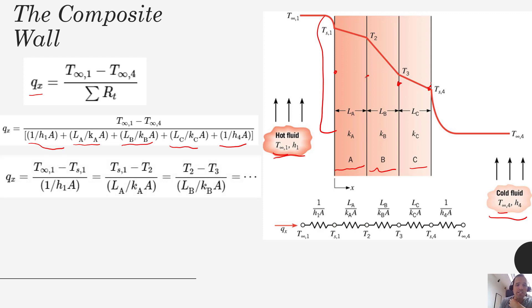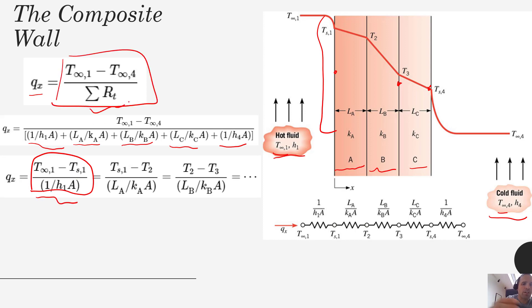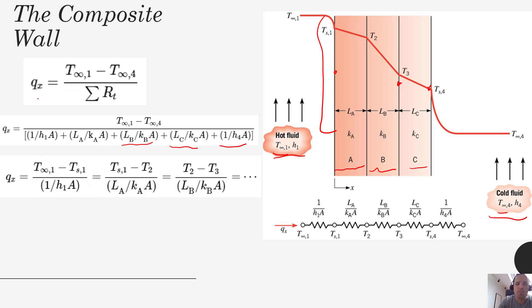We can still equate different pieces of this to create more equations and solve for unknown temperatures. If we want to know TS1, for example, we could take that equation and equate this part with this part. We get our total delta T over total thermal resistance equaling a smaller delta T coupled with a smaller resistance — the ratio of those two things would be the same. That would create an equation with only one unknown, TS1.